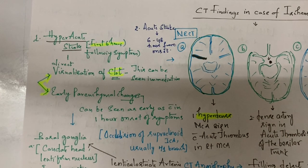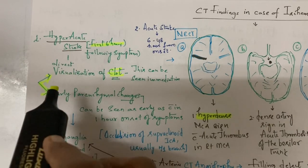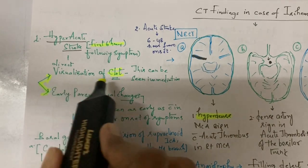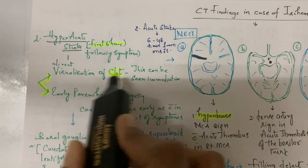Once the patient comes to the emergency room and is transferred to CT, we have to look for clot. Clot can be seen immediately, along with early parenchymal changes.